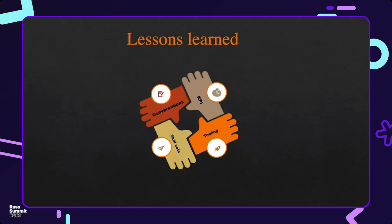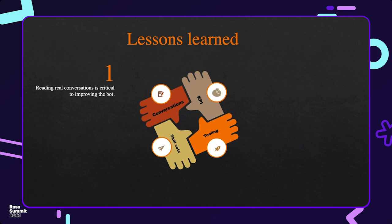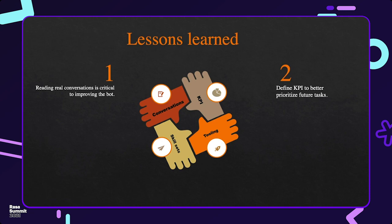I would like to share some lessons learned by our teams. Firstly, reading real conversations is critical to improving the bot. Frequently analyzing real conversations in detail is highly recommended. Secondly, there are so many indicators when it comes to measuring chatbot performance. However, each bot is unique. How you measure your chatbot's success should directly align with your bot's use case. It's important to define your main KPIs to better prioritize, especially for the primary iterations when the chatbot has many weak spots.